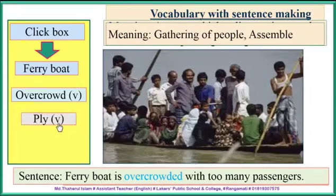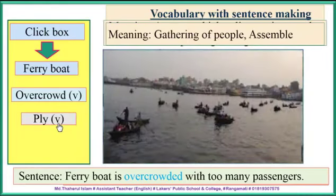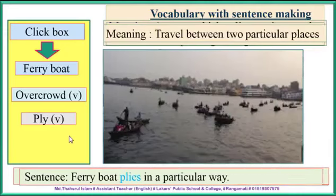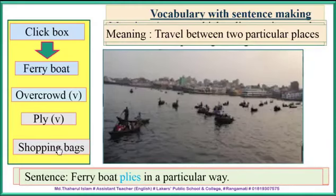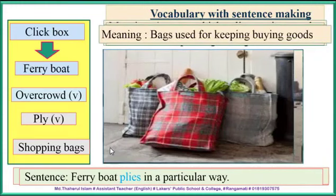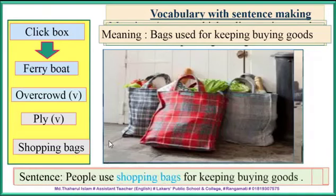'Ply' — look at the picture: people go from one side to the other side using the boat. The meaning: to travel between two particular places. Sentence: 'The ferry boat plies in a particular route.' 'Shopping bag' — look at the picture. Meaning: bags used for carrying buyers' goods. When you go to the market and finish shopping, you use the bag to carry the goods — this is called a shopping bag. Sentence: 'People use shopping bags for keeping bought goods.'